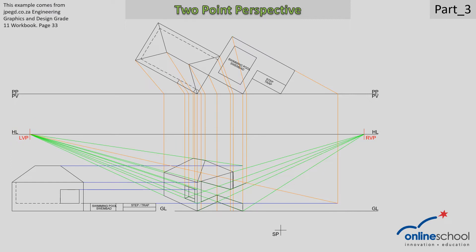I'm moving my focus now to the top view at the top right hand corner where the back end of the step area is. From that point I'm going to draw a light construction line to the standpoint and break it off at the picture plane, giving me a reference point. Once I've gotten that, I'm going to move my ruler to the right vanishing point and draw a light construction line from the right vanishing point through that intersection at the bottom, as illustrated here. Once I have that, I'm going to draw in a solid line to fill up the back and outer edge of the swimming pool and the step area at the back.